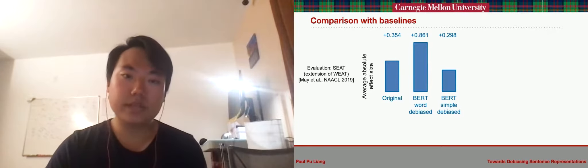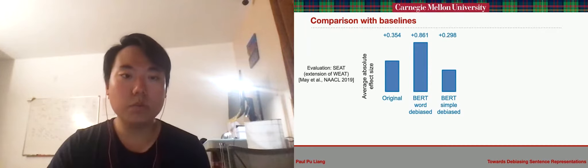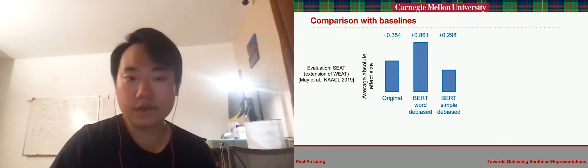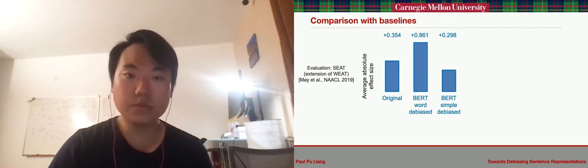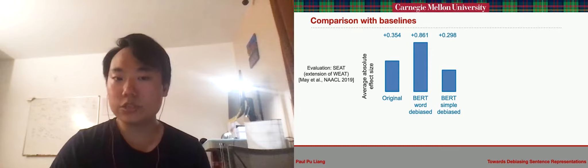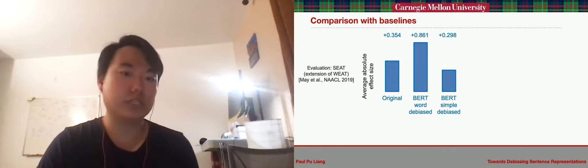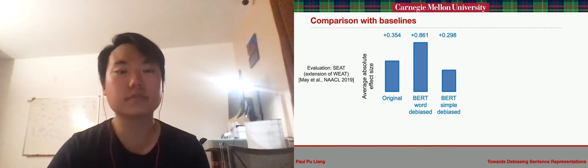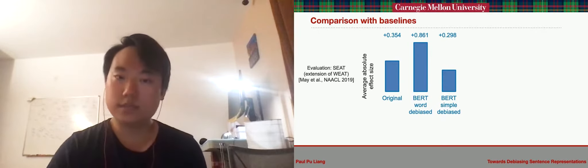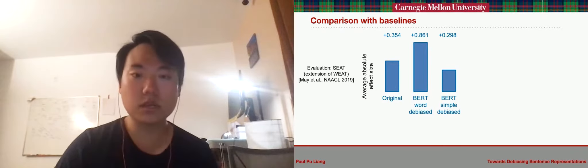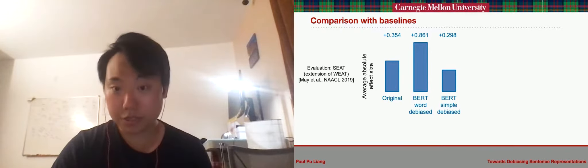To evaluate the effectiveness of our approach, we compare several baseline methods for debiasing. The first one is BERT word, which obtains a debiased sentence representation from the average of debiased BERT word representations by simply applying existing word-level debiasing methods. The second baseline is what we call BERT simple, which uses these simple sentence templates to debias BERT sentence representations.